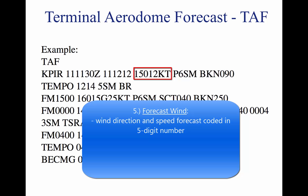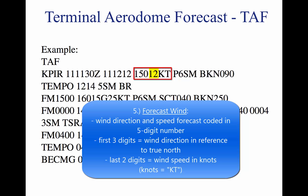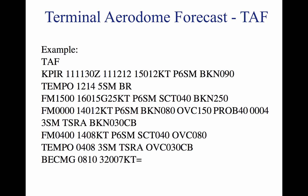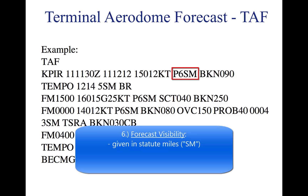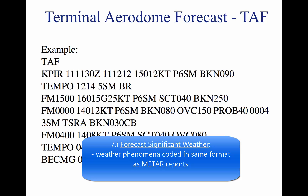Five, forecast wind — 15012KT. The wind direction and speed forecast are given in a five-digit number group. The first three digits indicate the direction of the wind in reference to true north; the last two digits state the wind speed in knots, denoted by KT. Six, forecast visibility — P6SM, given in statute miles in whole numbers or fractions. If the forecast is greater than six miles, it will be coded as P6SM. Seven, forecast significant weather — weather phenomena are coded in TAF reports in the same format as the METAR. If no significant weather is expected, the denotation NSW is included in the becoming or temporary weather groups.